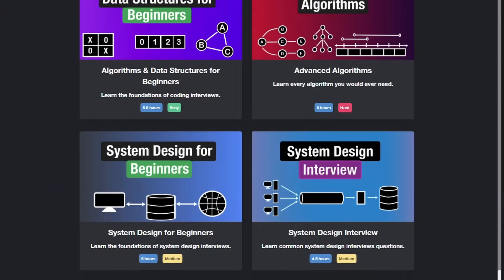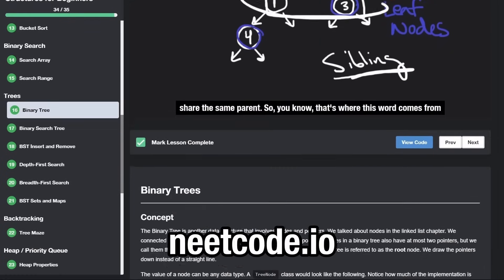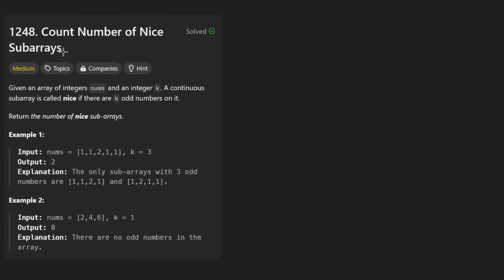Hey everyone, welcome back and let's write some more neat code today. So today let's solve the problem, count number of nice subarrays. So given an array like this, we want to count every single subarray that has exactly k odd elements.